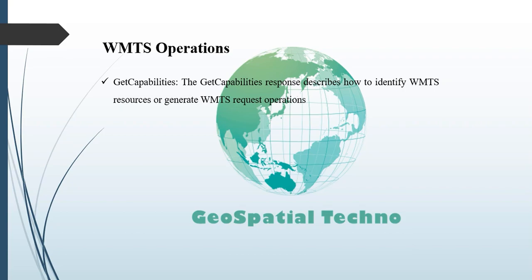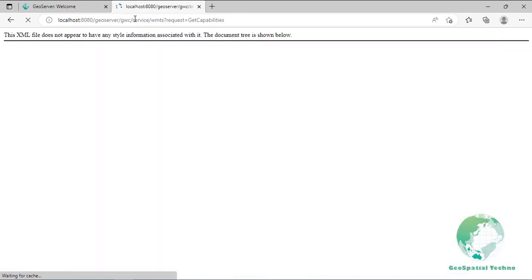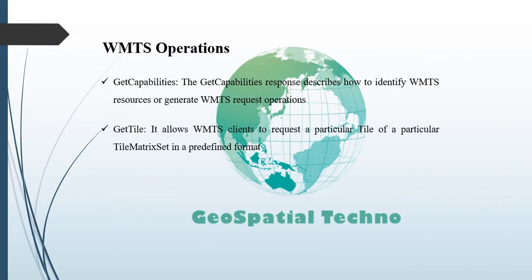An example of a GetCapabilities request is shown. The GetTile operation under a procedural-oriented architectural style allows WMTS clients to use the information from the GetCapabilities response to request a particular tile of a particular TileMatrixSet in a predefined format. Under the resource-oriented style, the client requests the representation of any offered tile resource by performing a request to the address following the standard semantics of the transport protocol.